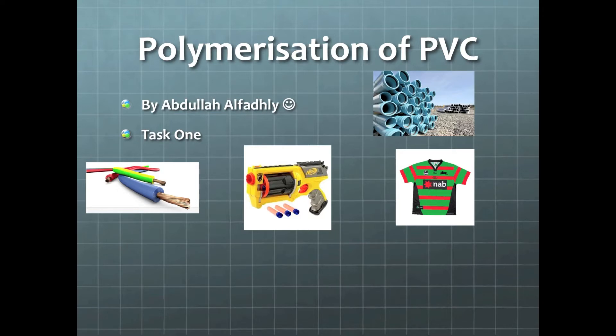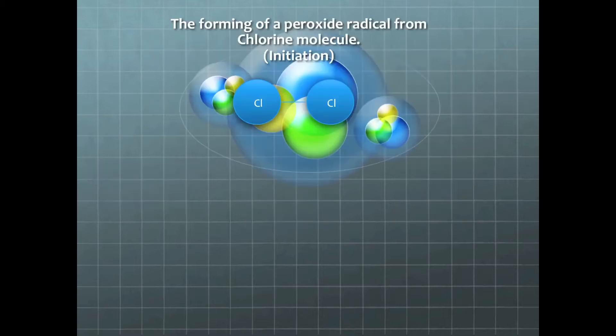The process of creating PVC consists of four stages, the first one being initiation. This is when chlorine is heated under certain temperatures and pressures so that the diatomic molecule splits, forming two radicals.